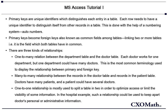Many-to-many is the relationship between the records in the doctor table and records in the patient table. Doctors have many patients, and a patient could have several doctors. One-to-one relationship is mostly used to split a table in two in order to optimize access or limit the visibility of some information. In the hospital example, such a relationship could be used to keep apart a doctor's personal or administrative information.